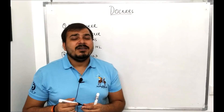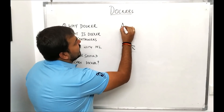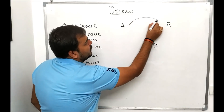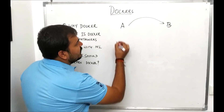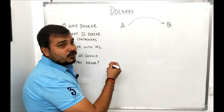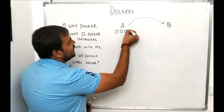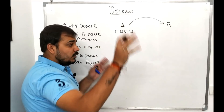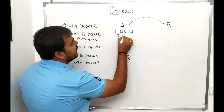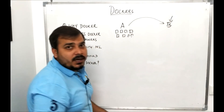Let me take a real-world example. Suppose you are staying at house A and you want to shift to house B. When you shift, there are a lot of things in your house — television, refrigerator, washing machine, TV set and its stand, dining table, and various other things — and you want to transfer all of these to the new house B.